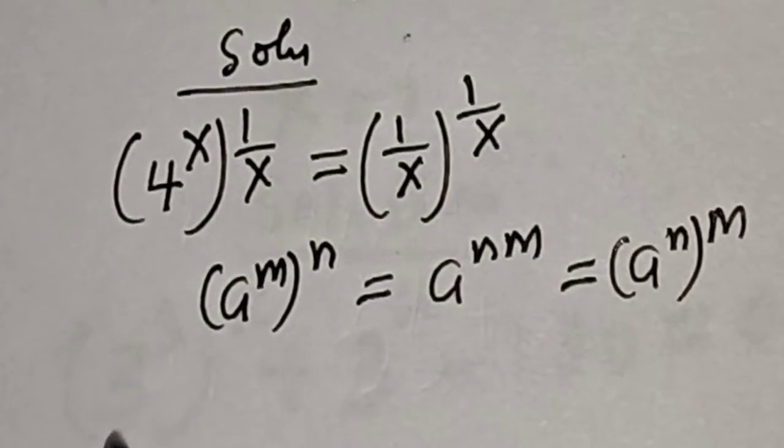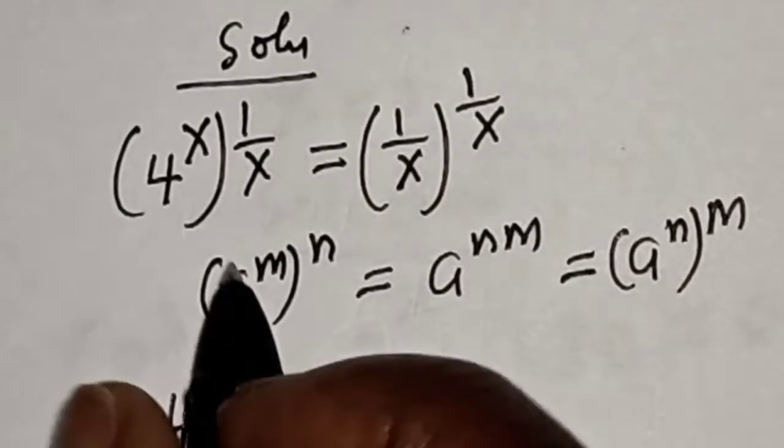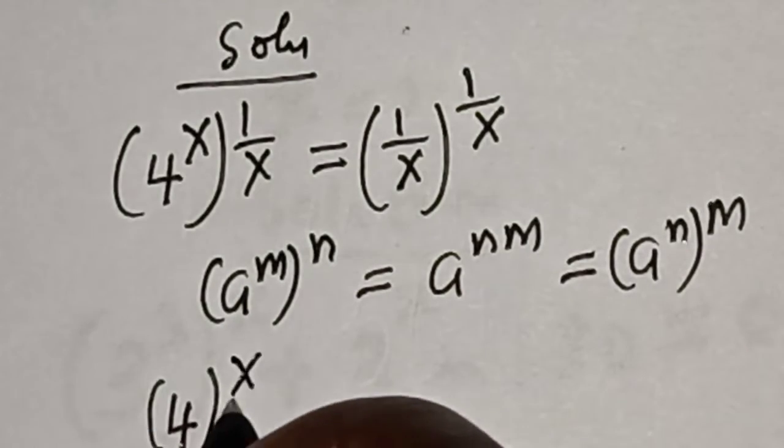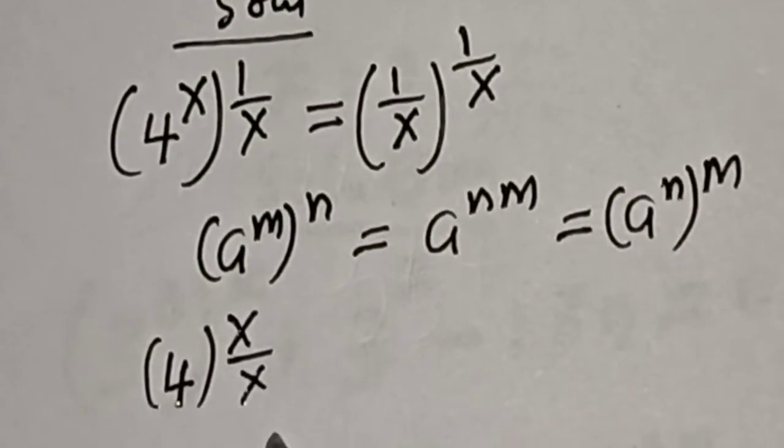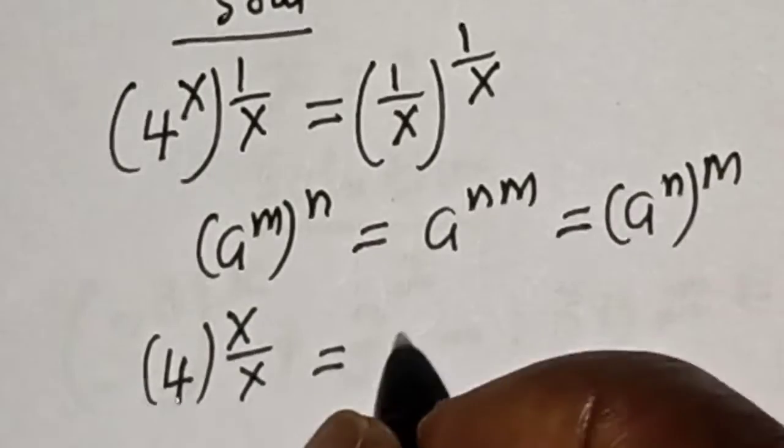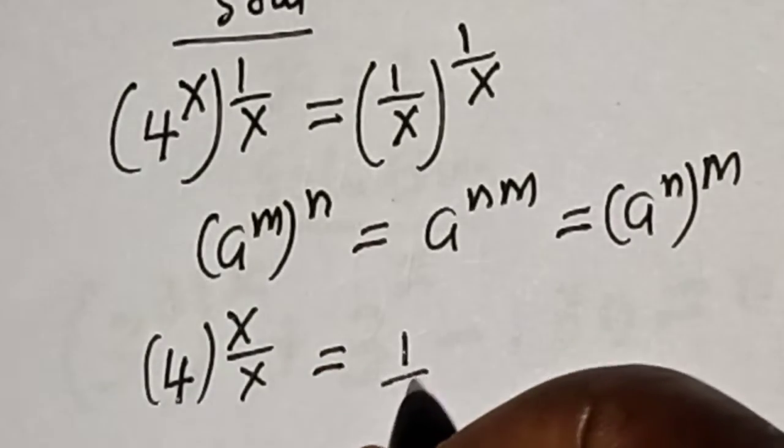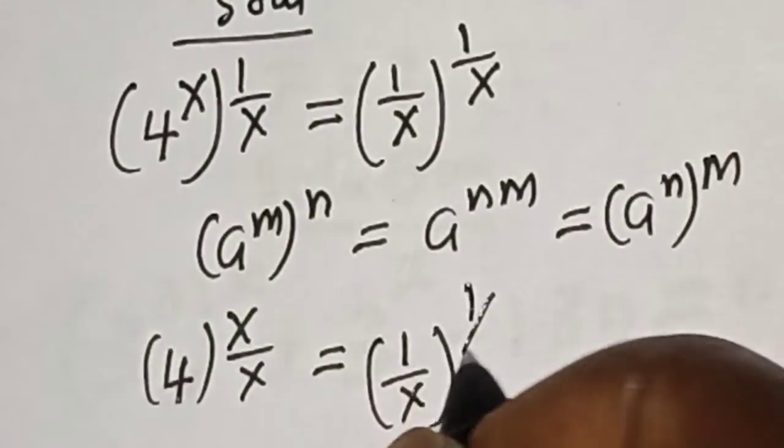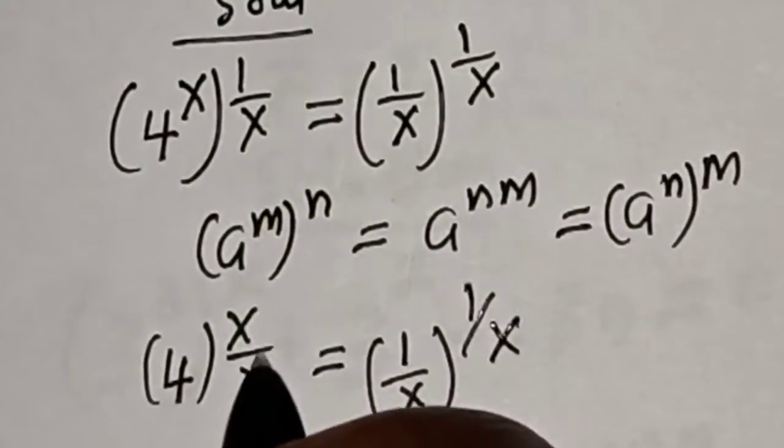Here we have 4 to the power 1, since s times 1 over s equals 1. This is equal to 1 over x, all to the power 1 over x.